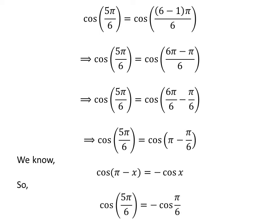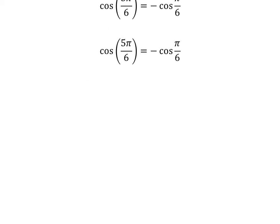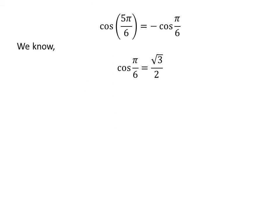Application of the above identity gives us cosine of 5 times pi upon 6 is equal to minus cosine of pi upon 6. We know cosine of pi upon 6 is equal to square root of 3 upon 2. So, cosine of 5 times pi upon 6 is equal to minus square root of 3 upon 2.